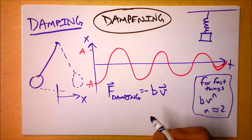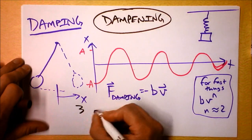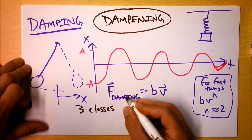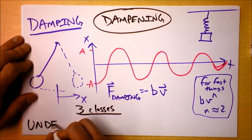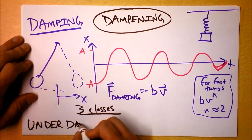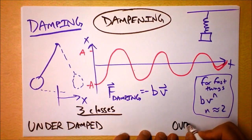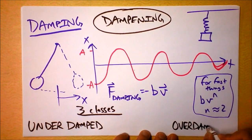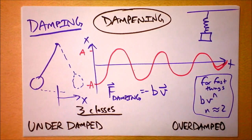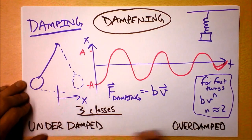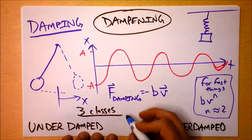What we know about damping is there are three classes of damping. The three classes are underdamped, overdamped, and critically damped. This is like Papa Bear, Mama Bear, and Baby Bear — just right.